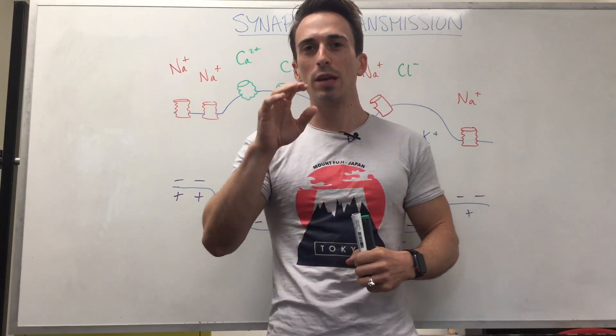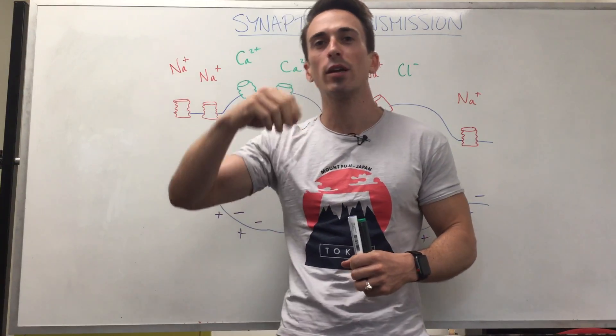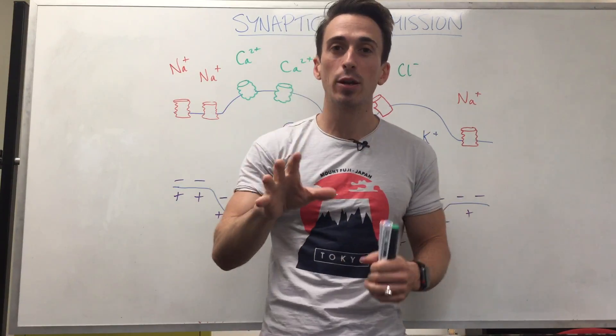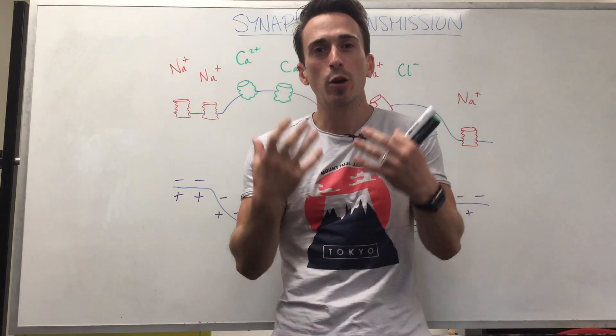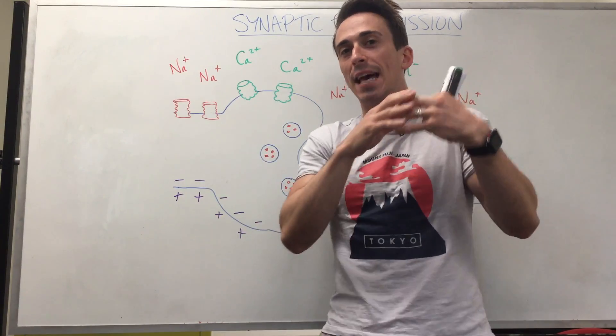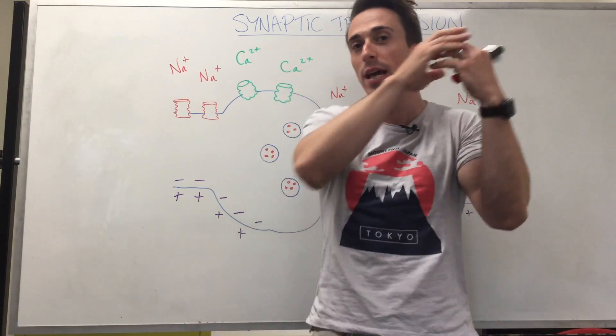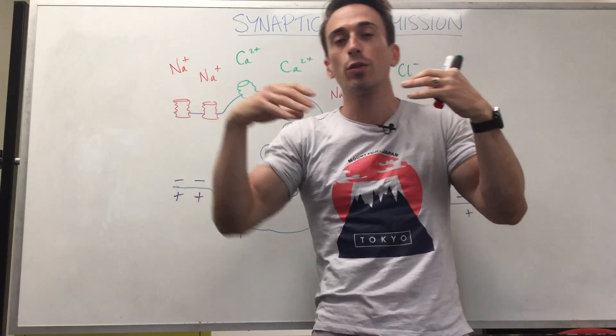Hi everyone, Dr. Mike here. Now in previous videos we've spoken about how we can either stimulate or inhibit a neuron from sending a signal. We've spoken about how a neuron can actually send that signal, that electrical impulse, down its long axon. We call that an action potential.